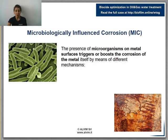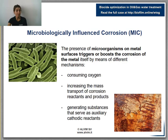MIC is caused by the presence of bacteria on metal surfaces. The biological activity enhances corrosion of the metal itself through several mechanisms. First, bacteria consume oxygen, boosting metal corrosion. Second, by increasing mass transport, corrosion is pushed to proceed. Third, bacteria produce auxiliary cathodic reactants.